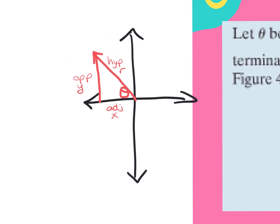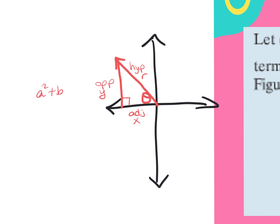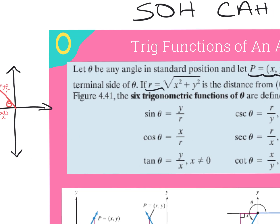What we're really doing here is the Pythagorean theorem. Instead of a, b, and c, we're using x, y, and r. So it becomes x squared plus y squared equals r squared. To find r instead of r squared, we square root both sides, and that gives us the formula r equals the square root of x squared plus y squared — which is written over here.